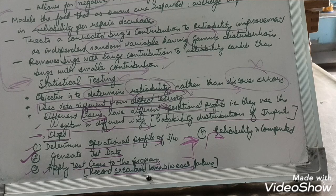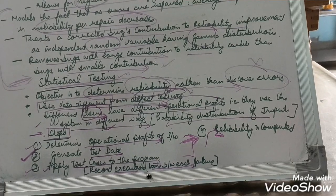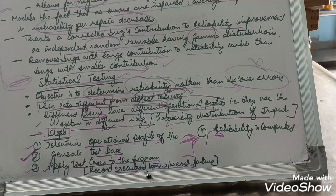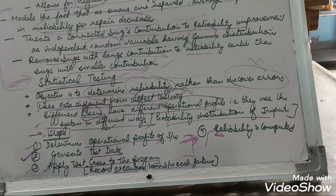The assignment questions are: first, explain and discuss the various reliability models. Second, discuss the various parameters used for software reliability. Third, differentiate between software and hardware reliability by means of a curve. Thank you.